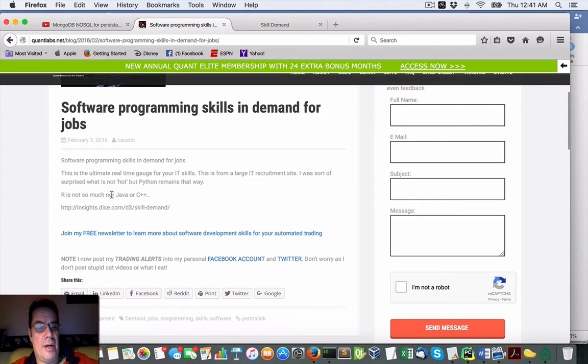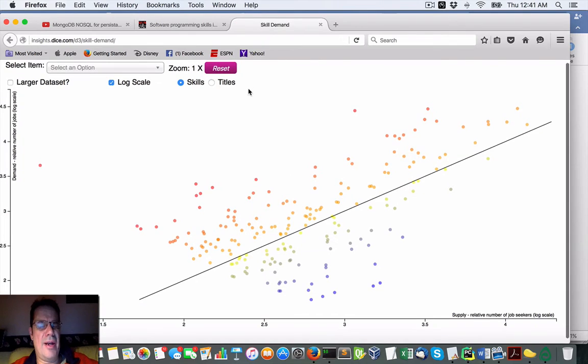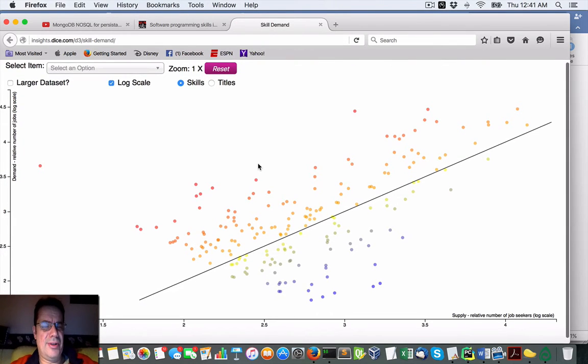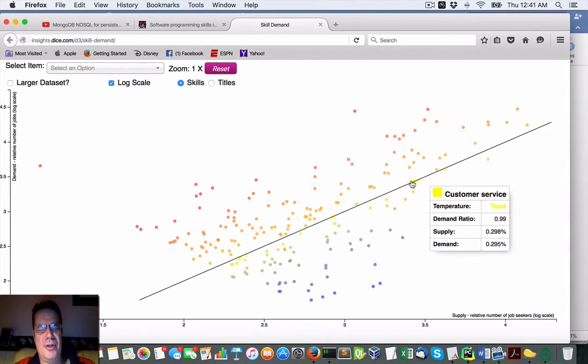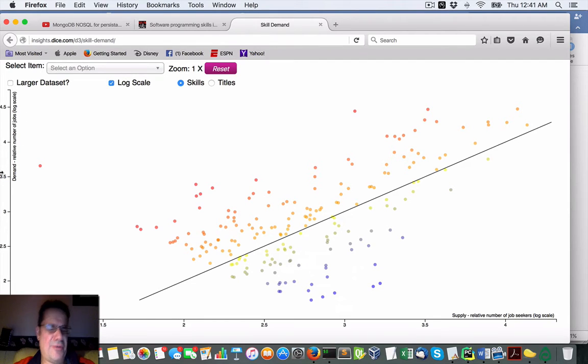This is from Dice.com. This is probably the largest recruiting site for jobs when it comes to software in the U.S. So what they've done is they've put in a skill demand chart of what the hottest technologies are, and it's based upon supply and demand. Now this is from their website and I believe this is real time.